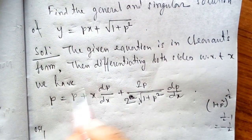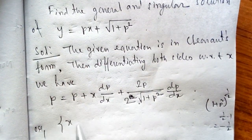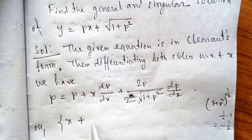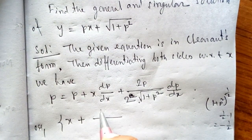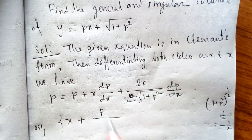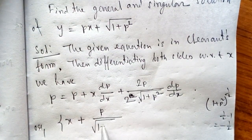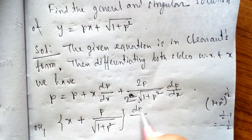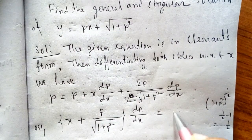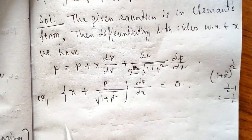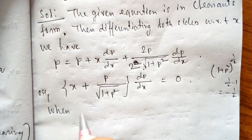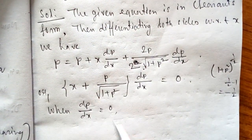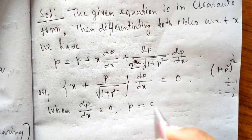Taking dp/dx common: (dp/dx) · [x + p / √(1 + p²)] = 0. When dp/dx = 0, then p = constant (c).